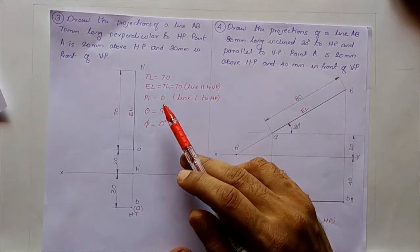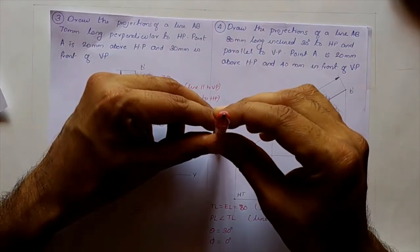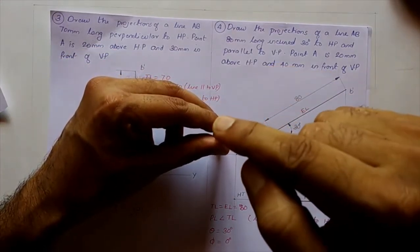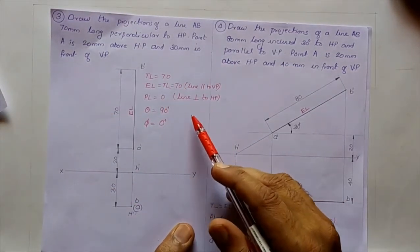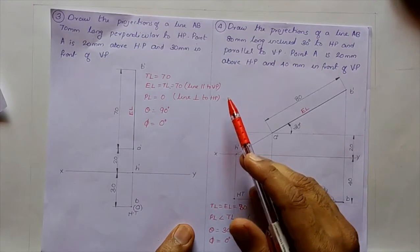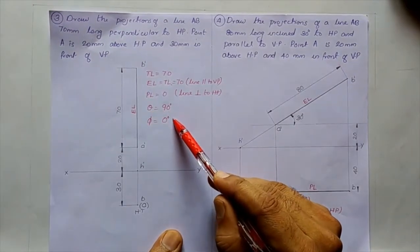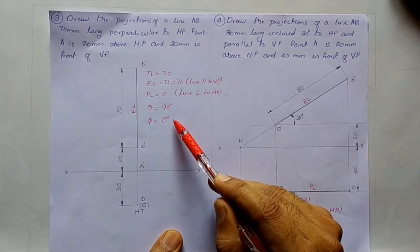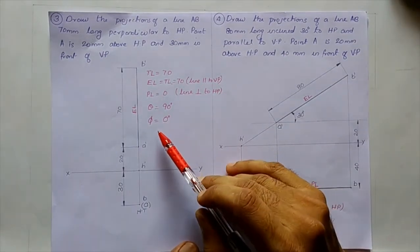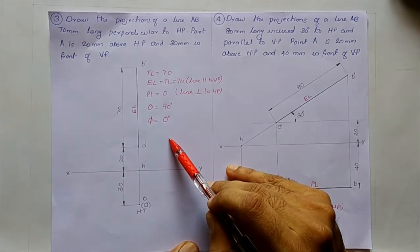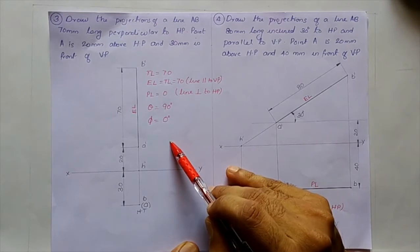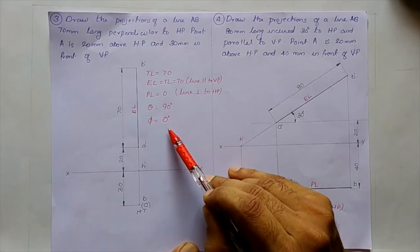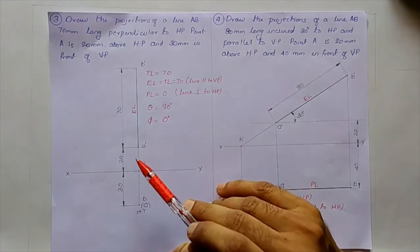The plan length is 0, because the line is perpendicular to HP — when observed from the top, the line appears as a point. The value of theta = 90° (line is perpendicular to HP), and phi = 0° (line is parallel to VP, so inclination with respect to VP is 0). These are the key properties of this line.